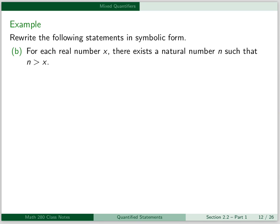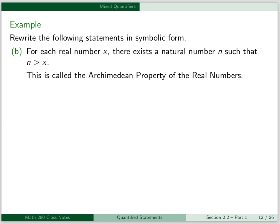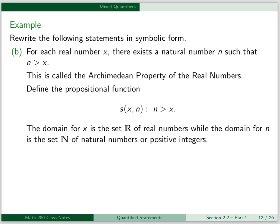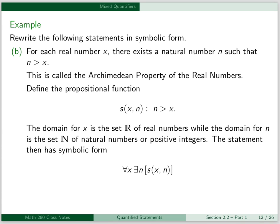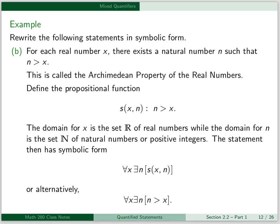For our next example, we have the statement: for each real number x, there exists a natural number n, such that n is greater than x. This is called the Archimedean property of the real numbers, and this will come up in advanced calculus. The propositional function s of x, n is: n is greater than x. The domain for x is the set R of real numbers, while the domain for n is the set N of natural numbers, or positive integers. The statement then has symbolic form: for all x, there exists an n, such that s of x, n. Or alternatively: for all x, there exists an n, such that n is greater than x.